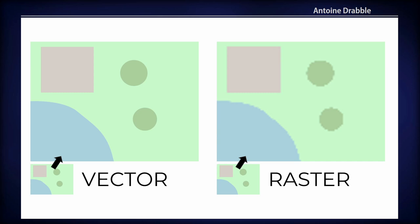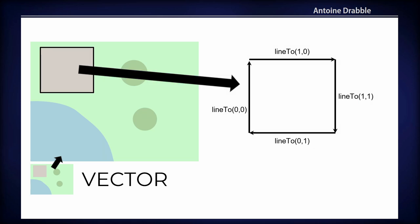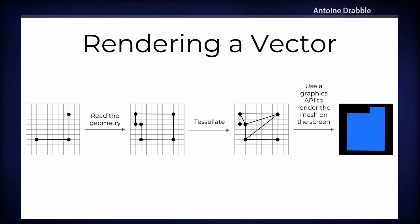On the other hand we have the vector tile. A vector is a geometry — for example, a square is composed of four lines — and the renderer has to create an image from the geometry to display it on screen. The first step is to read the geometry, then we perform tessellation, also called triangulation. The goal is to create a set of triangles from the polygon, which is required because graphics APIs are optimized to work with triangles. The result is called a mesh.